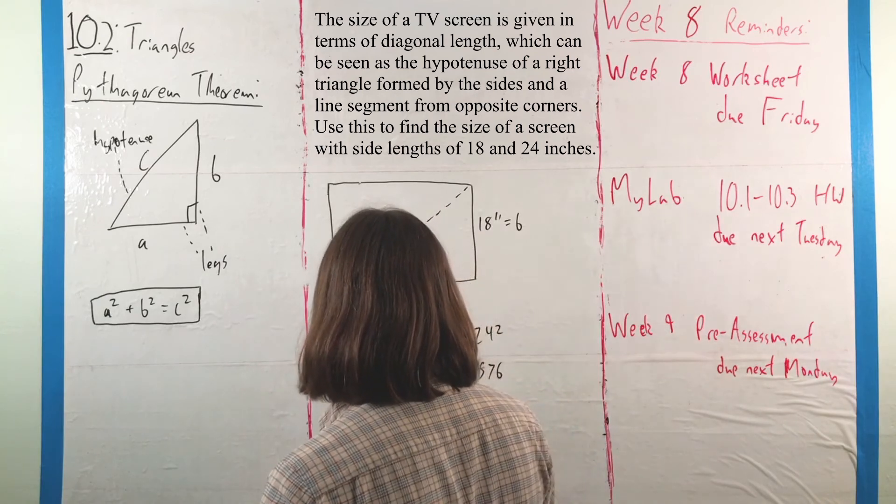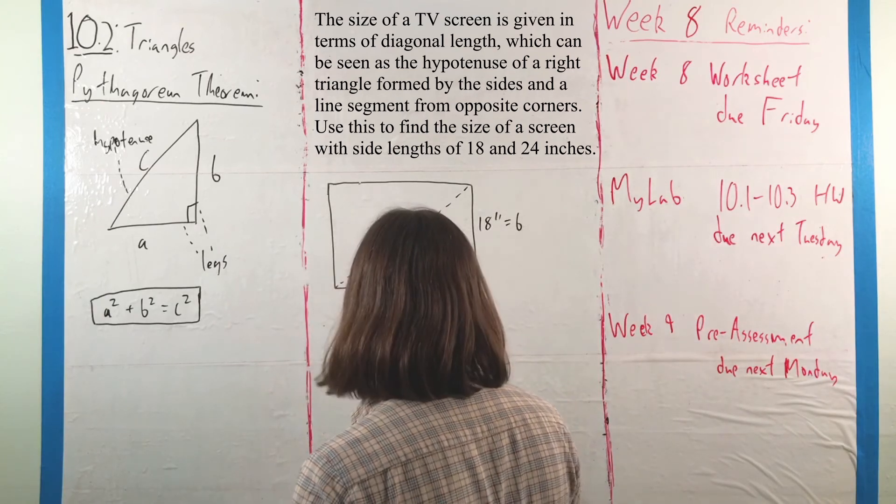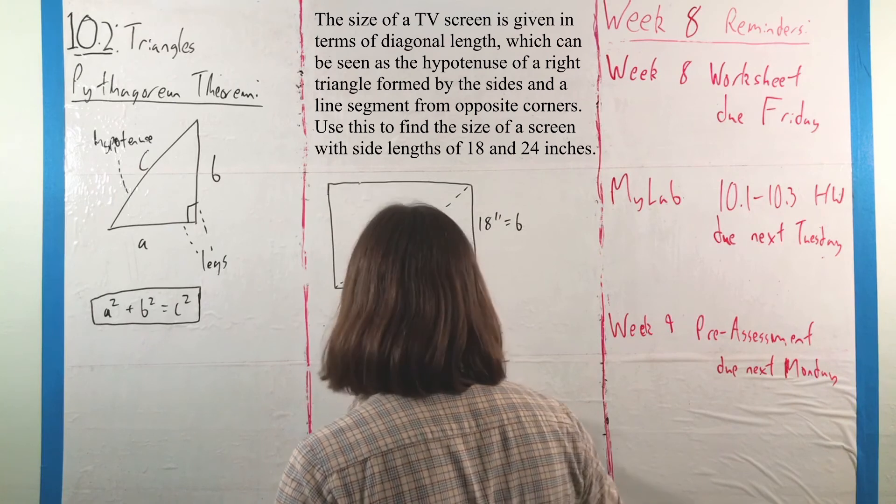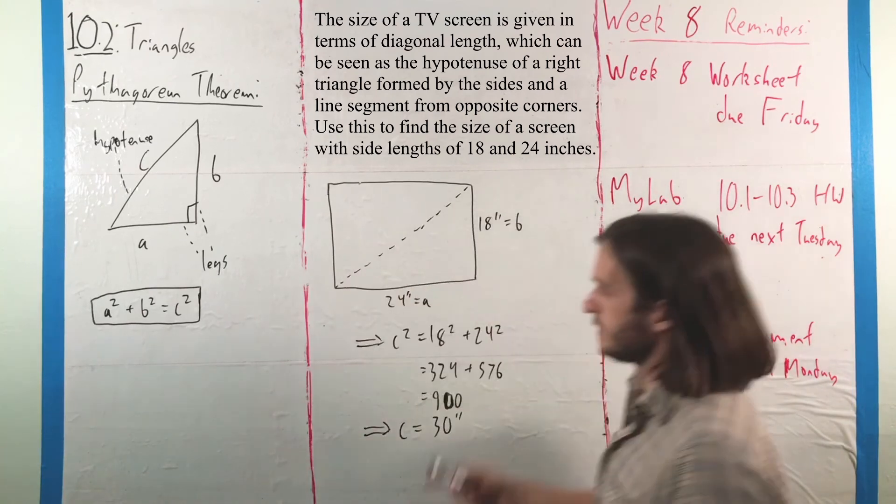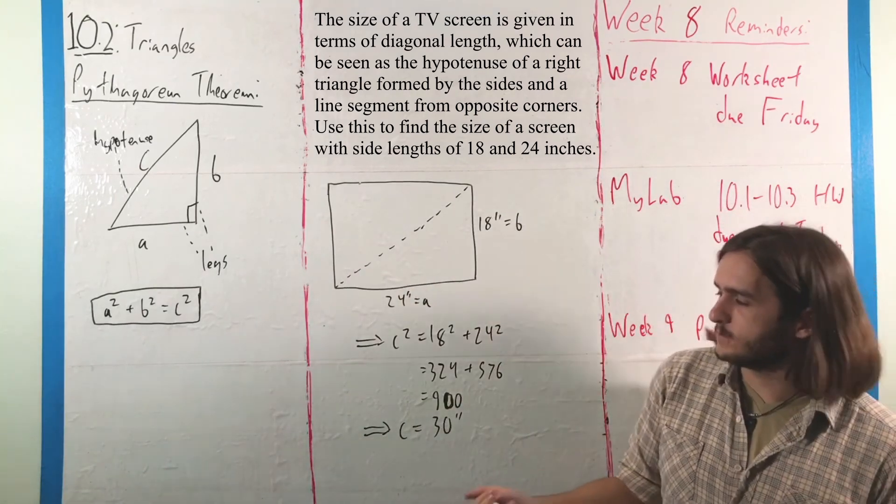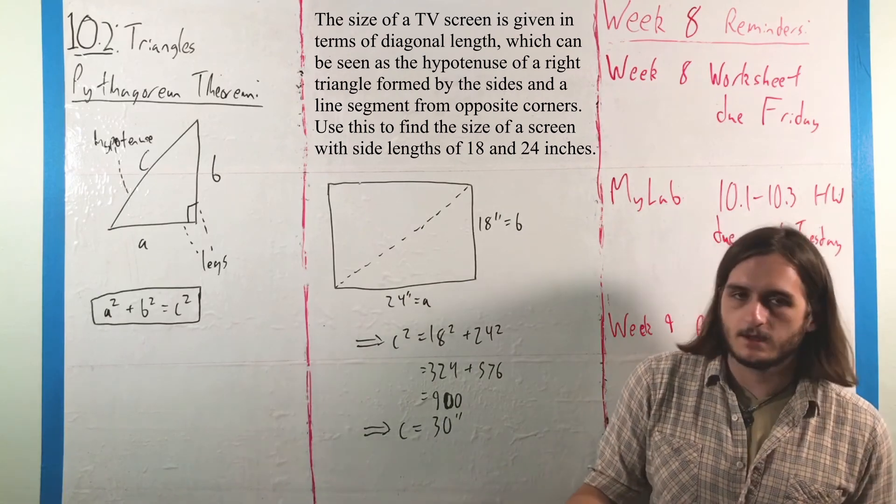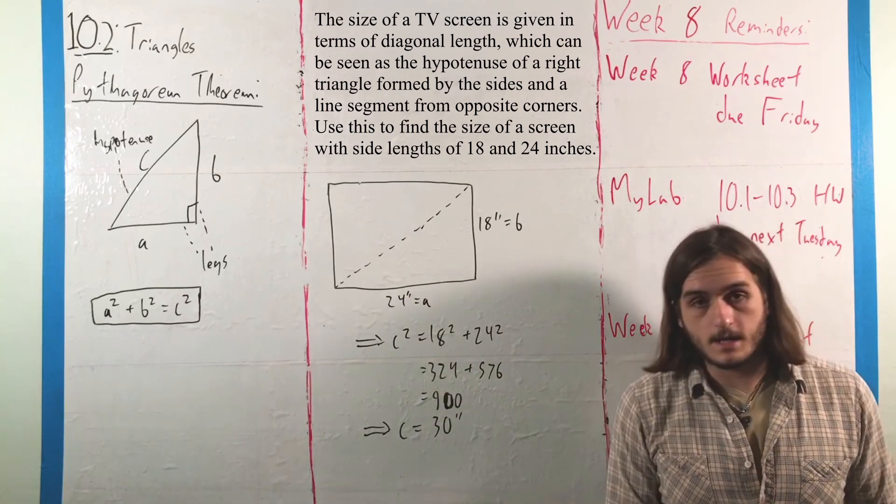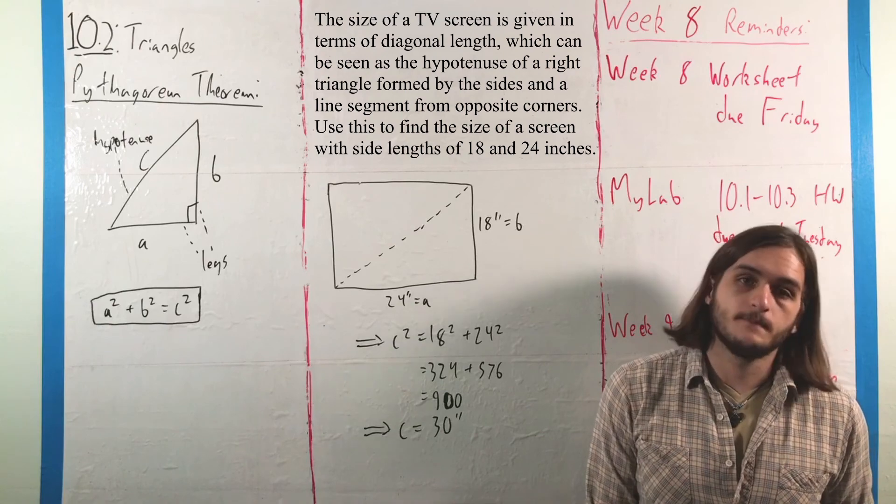Or, if you prefer, and most people would, C is equal to 30. So we could say that this, in terms of that measurement scheme and up to scale, obviously, would be a 30 inch screen TV.